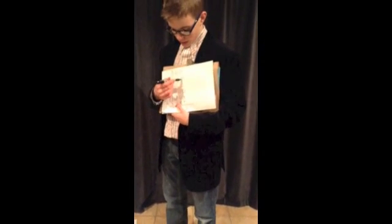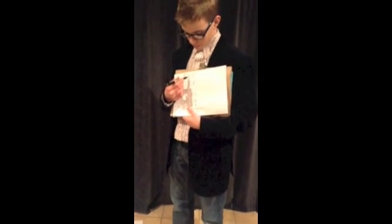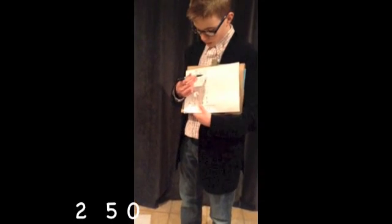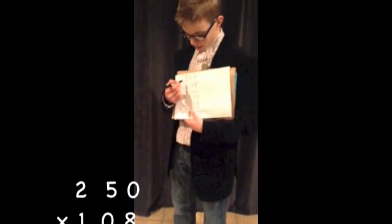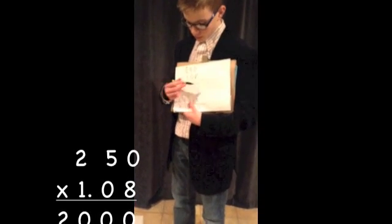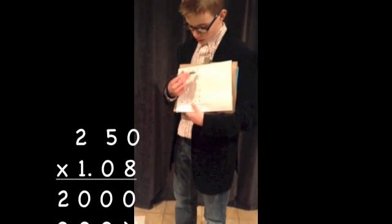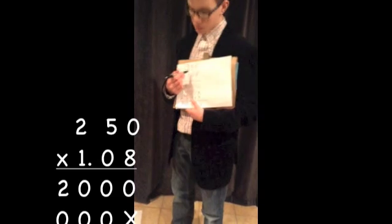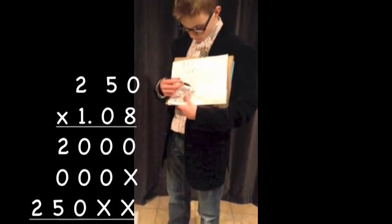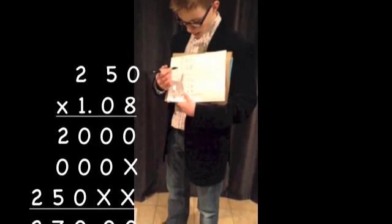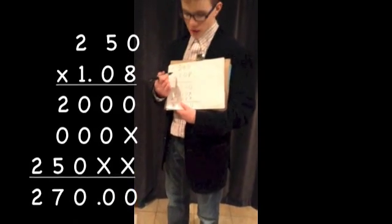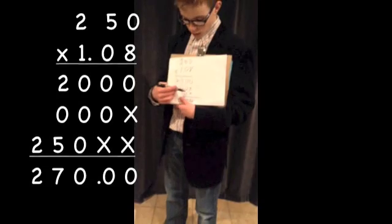So: 8 times 0 equals 0. 8 times 5 equals 40, carry the 4. 8 times 2 equals 16, plus 4 equals 20. Now, 0 times any number equals 0 — as everyone should know, or you should not be watching this show. And you should also know that 1 times any number equals that number, or you should not be living.